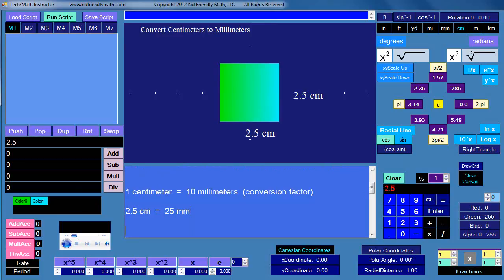Then from there to get the area of the square. The area of the square equals 25 millimeters times 25 millimeters equals 625 square millimeters. That's going to be the area in millimeters.